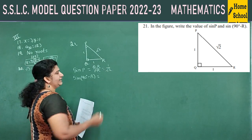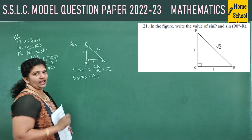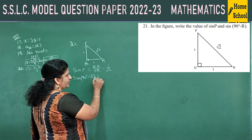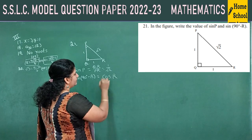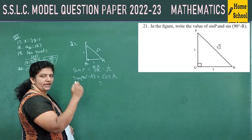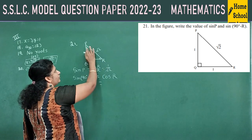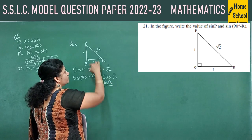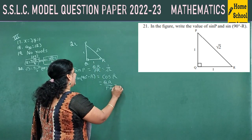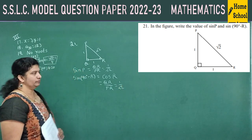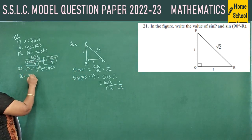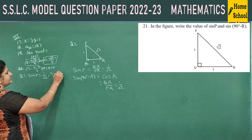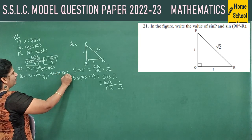For sin(90° − R): use the complementary angle identity sin(90° − θ) = cos θ, so sin(90° − R) = cos R. For angle R, the adjacent side is QR = 1 and hypotenuse = PR = √2. So cos R = 1/√2. Therefore sin P = 1/√2 and sin(90° − R) = 1/√2.